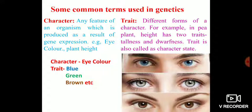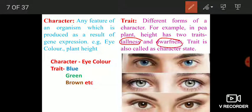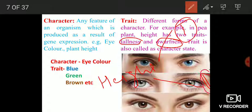The second important term is trait — simply the different forms of a character; they constitute traits. For example, in the pea plant, plant height has two traits: one is tallness and another one is dwarfness. Trait is also known as character state. So plant height is a character, and this height has two traits — tallness and dwarfness — which are also known as different character states. You have two character states for height in the case of the pea plant.